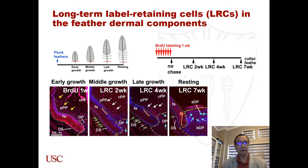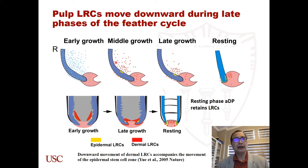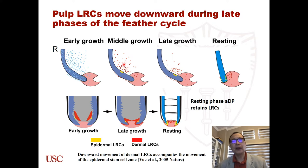This is the real data, and from the schematic drawing you can find the different distribution of LRCs in different stages of feather growth. Basically, we can find the distribution of LRCs in the peripheral pulp, and they gradually sink down and eventually are found only in the apical part at the resting phase.